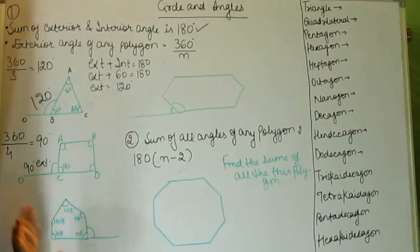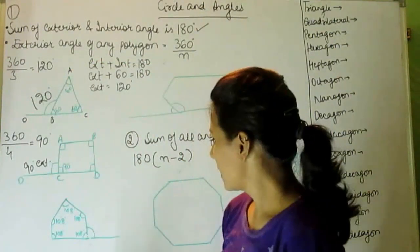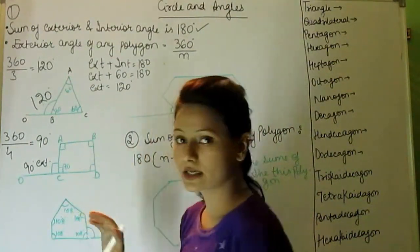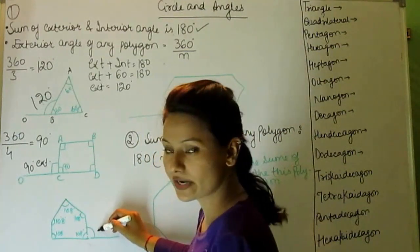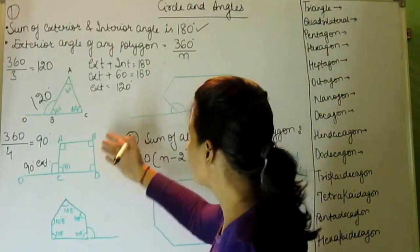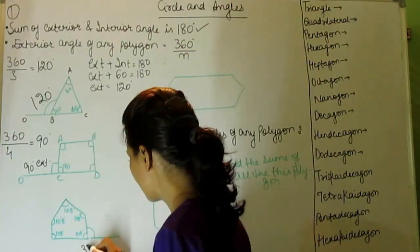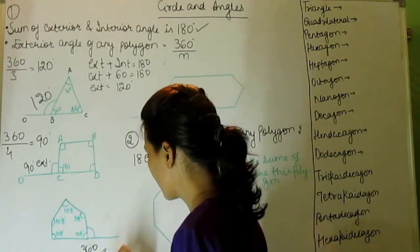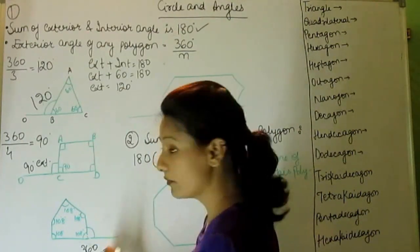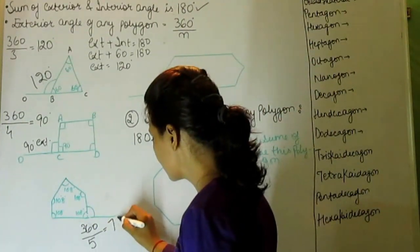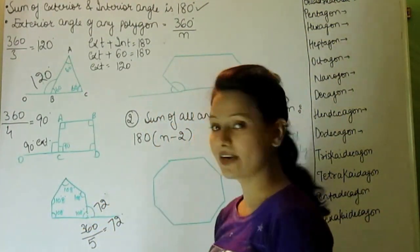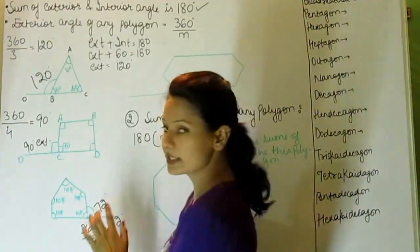Now we are given a pentagon with interior angle 108 degrees, and we have to find the exterior angle. Using the formula 360 divided by N, N is 5 because a pentagon has 5 sides. 360 divided by 5 equals 72 degrees. We can verify: 108 plus 72 equals 180 degrees, so interior plus exterior is 180. Correct.